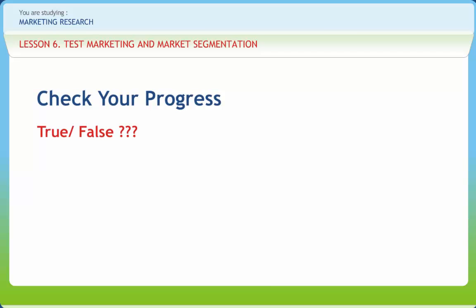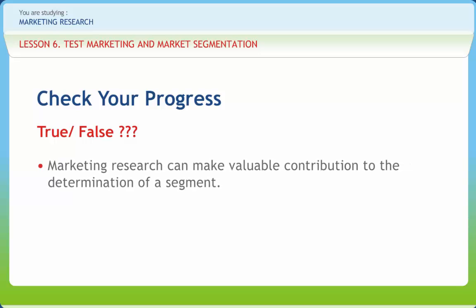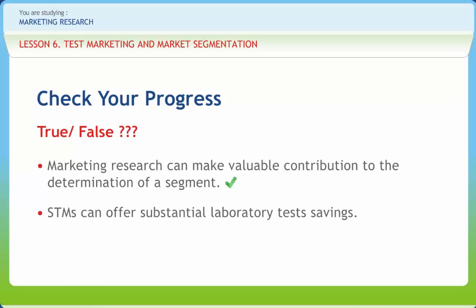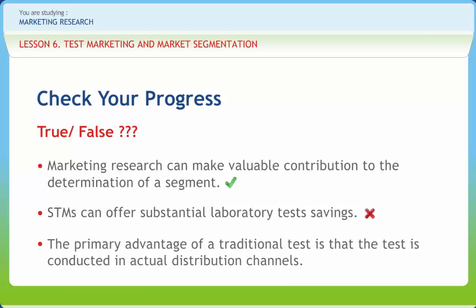Now let's see how much you have learned. State whether the following statements are true or false. Marketing research can make valuable contribution to the determination of a segment — True. STMs can offer substantial laboratory test savings — True. The primary advantage of a traditional test is that the test is conducted in actual distribution channels — True.